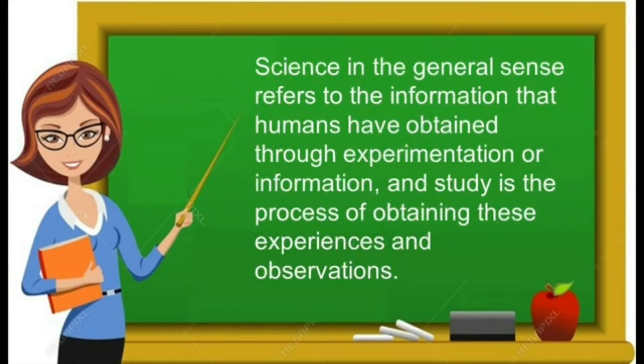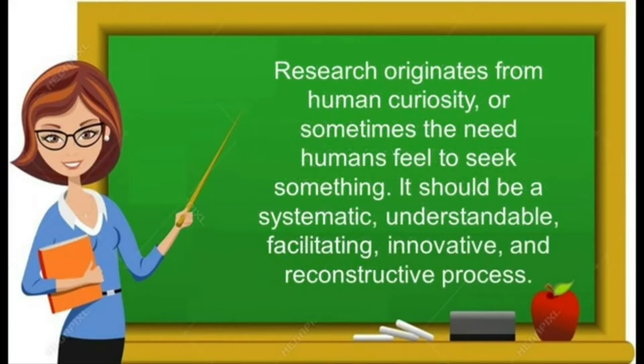For today's lesson, we're going to discuss the two main types or main classes of research, and the different categories of research: robotics and intelligent machine, life science, applied sciences, and innovation. Science in the general sense refers to the information that humans have obtained through experimentation or study, which is the process of obtaining experiences and observations. Research originates from human curiosity or the need humans feel to seek something — it should be a systematic, understandable, facilitating, innovative, and reconstructive process.